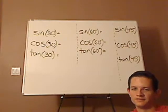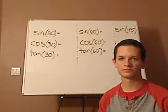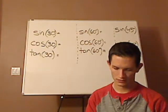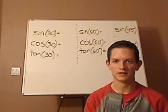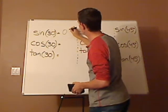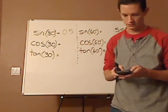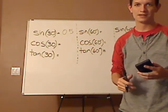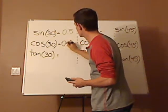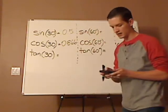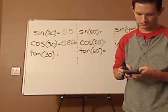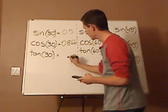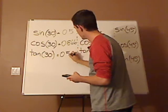Alright. Now, use your calculator and type in sine of 30 degrees. What you should have gotten is 0.5. So that is 0.5. Cosine 30 degrees is approximately 0.866. And then tan of 30 degrees is approximately 0.577.